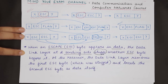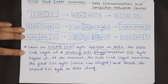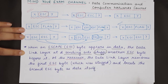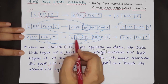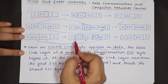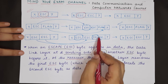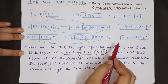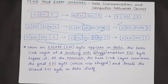Whenever an escape byte appears in the data, the data link layer at the sending side stuffs another escape byte before it — byte stuffing happens at the sender side. At the receiver, the data link layer removes the first escape byte that was stuffed and treats the second escape byte as data. Similarly, whenever the receiver sees an escape byte followed by a flag byte, it removes the escape byte and treats the following byte as data.